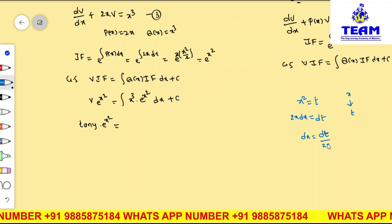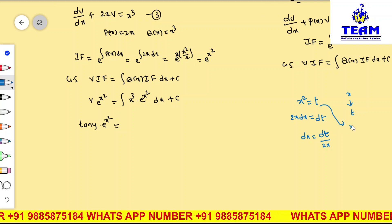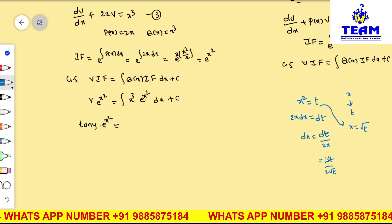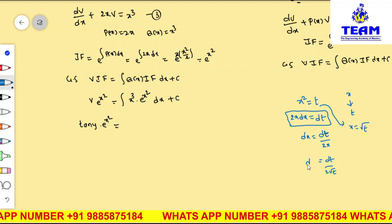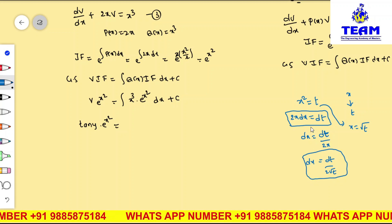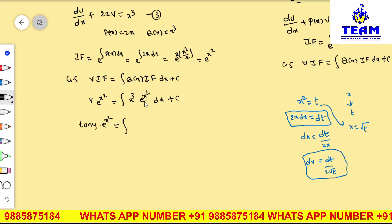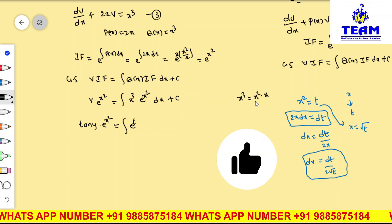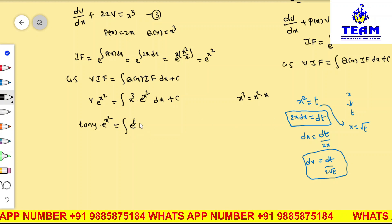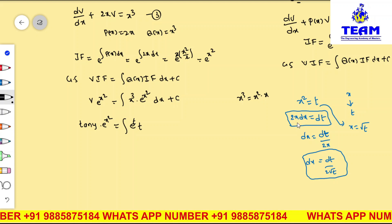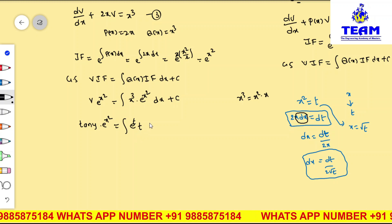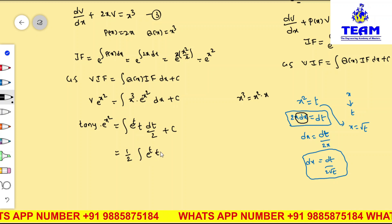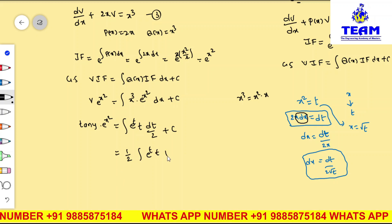Now, e^(x²) = e^t. We write x³ = x² · x, where x² = t. The remaining term x·dx = dt/2. So the integral becomes (1/2) · ∫t · e^t dt plus C. We apply the uv rule: ∫uv dx = u·v₁ − u'·v₂ + u''·v₃ − ... Taking u = t and v = e^t, we get (1/2)[t·e^t − e^t] + C.